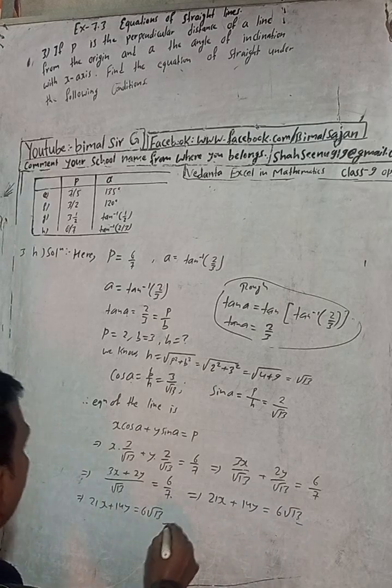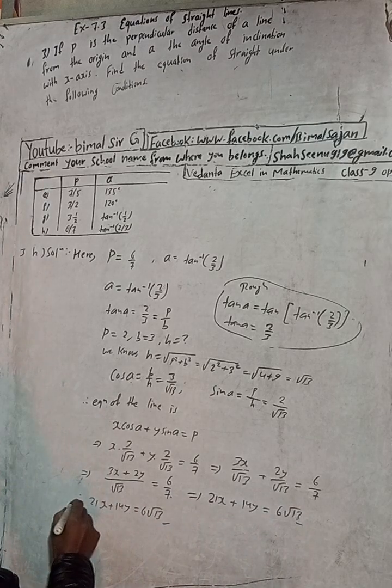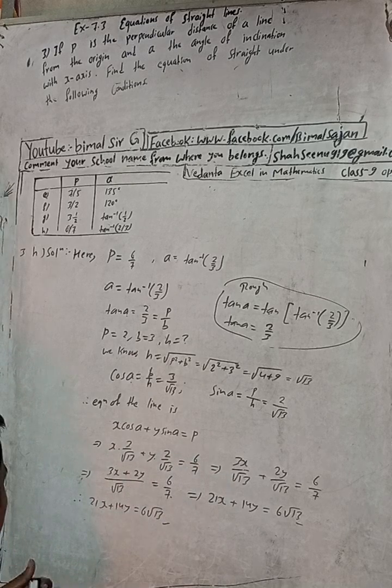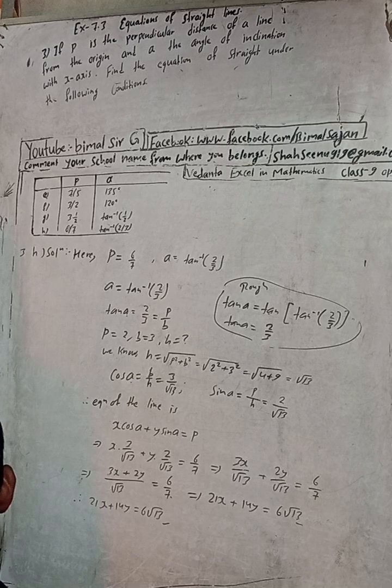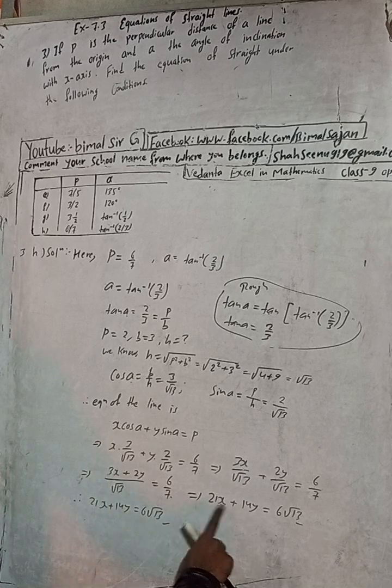This is the answer here. Therefore, I will now check the answer in the book. The answer in the book: 21x plus 14y is equal to 6 root 13.